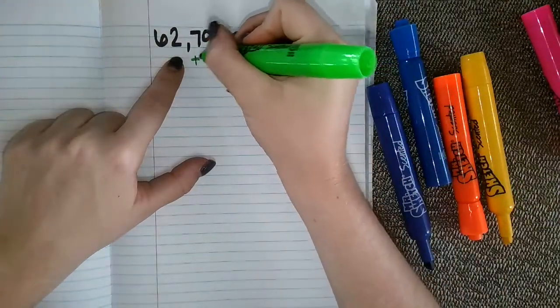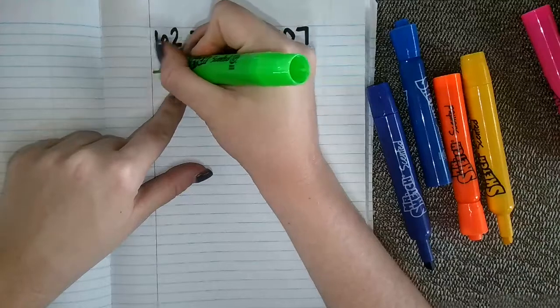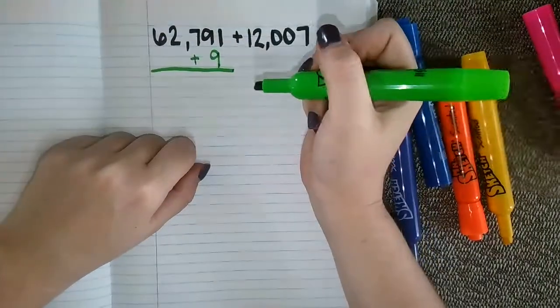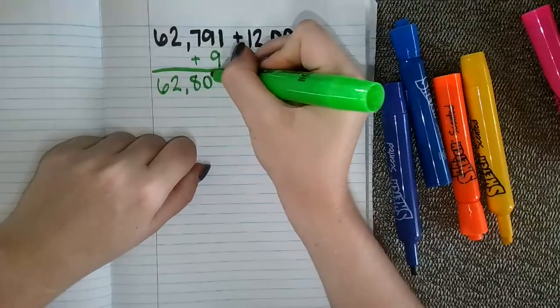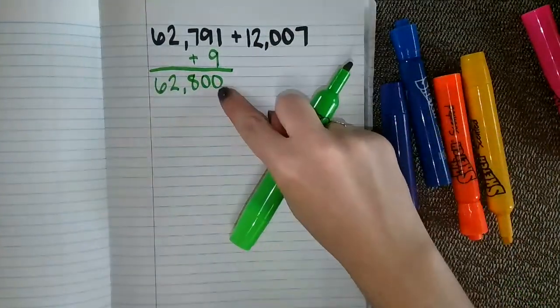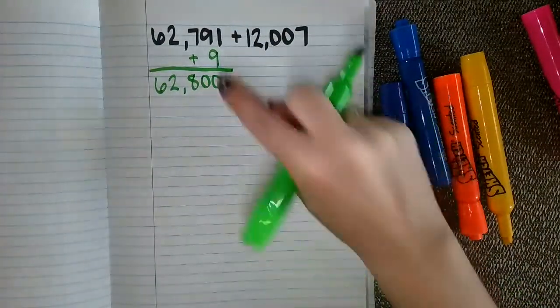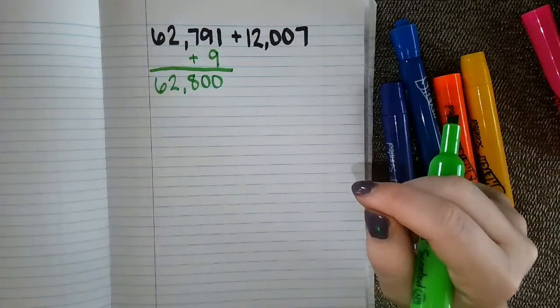I could get this to a really friendly number if I add 9. And if I add 9, that would get me to 62,800, which seems to be a lot more of a friendly number than the one we originally started with.